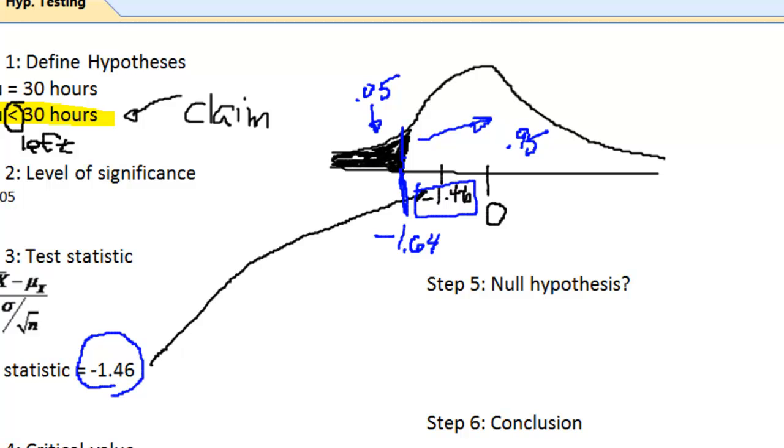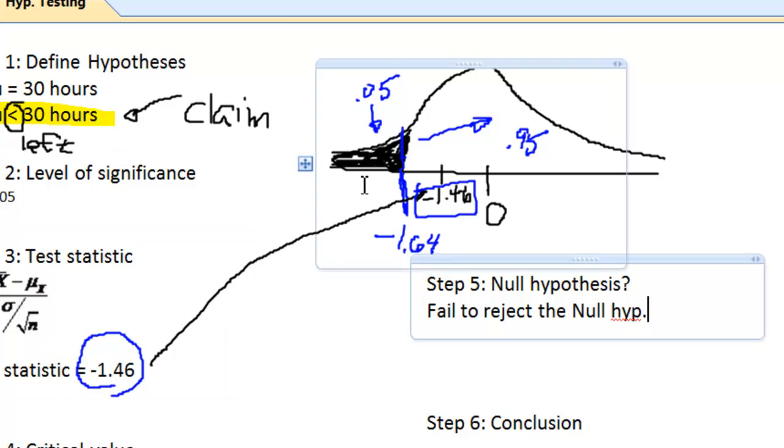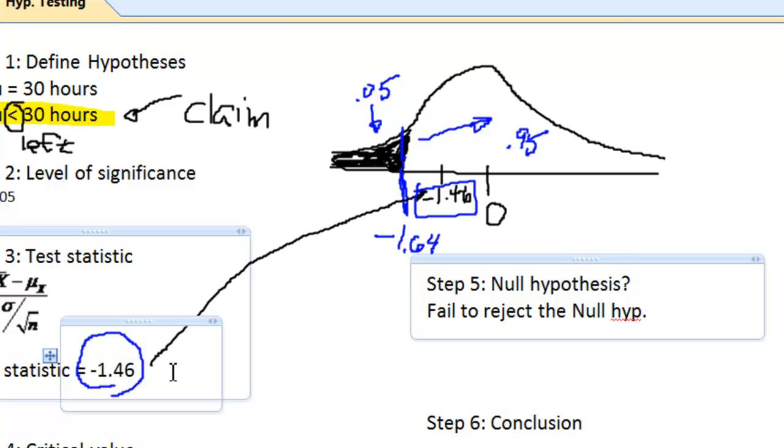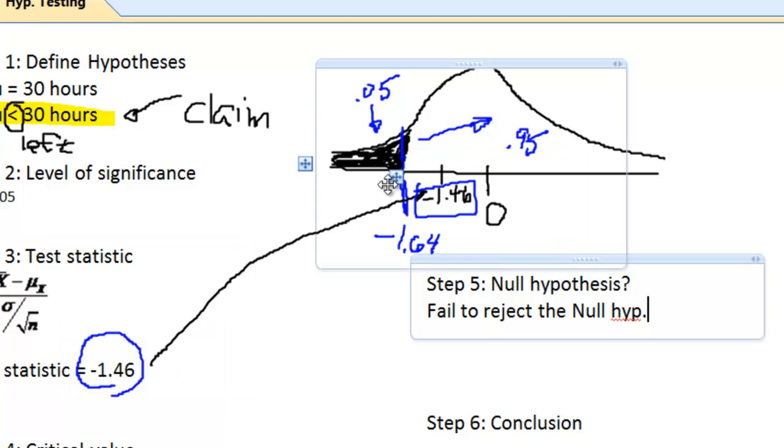So because it's not in the tail, we're now ready to answer step five. Step five is, what are you going to state regarding the null hypothesis? And because this is not in the critical area, then the null hypothesis is going to be stated this way: we're going to fail to reject the null hypothesis. If our test statistic happens to be in the tail - if we had calculated a test statistic of, say, negative 1.80-something, or even negative 1.65 - that would be in the tail. Anything smaller than negative 1.64 would put us in this shaded area, this reject region. So because we were not in that region, we're failing to reject.